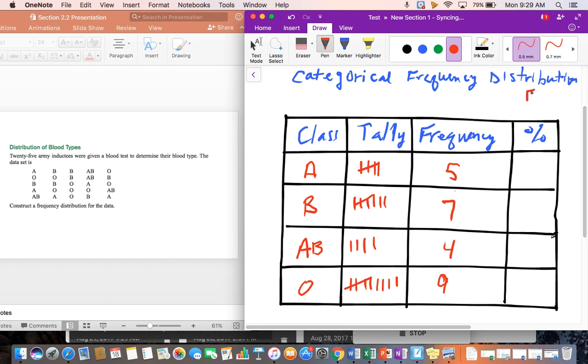All right, the percentage is going to be the frequency. So the number that we have over top of all of our total number of data. So here we have 25 army inductees. So this will become five over 25 or 20%. This next one would be seven over 25, which is 28%. The next one is four over 25, which is 16%. And the last one is nine over 25, which is 36%.